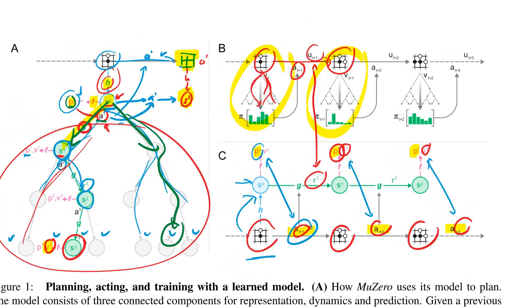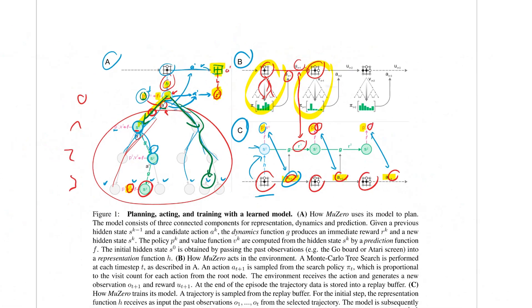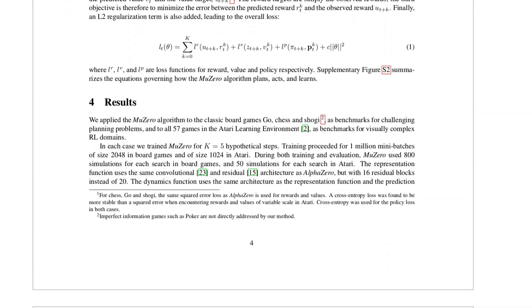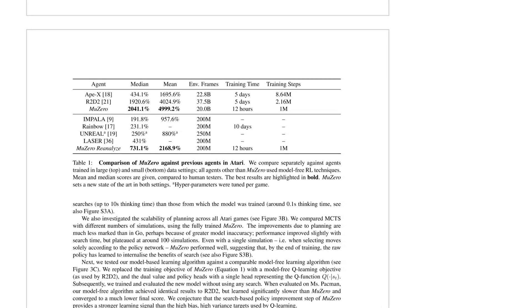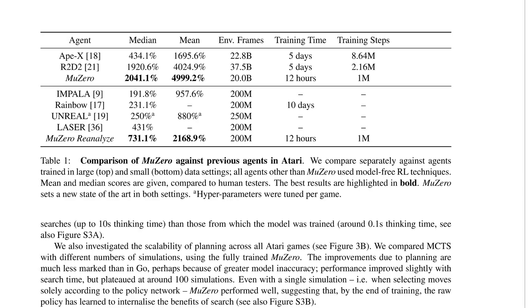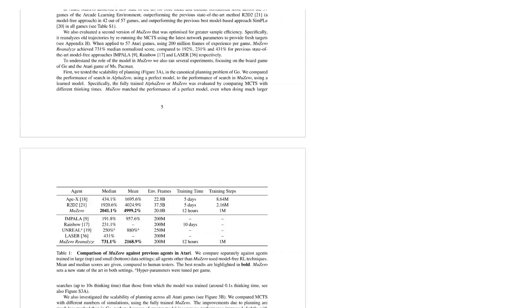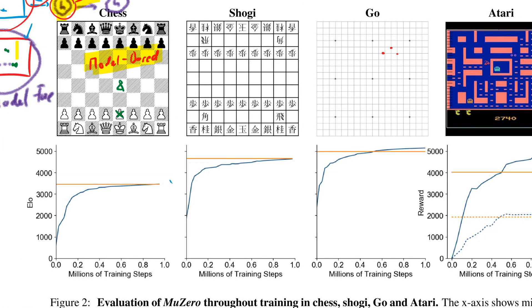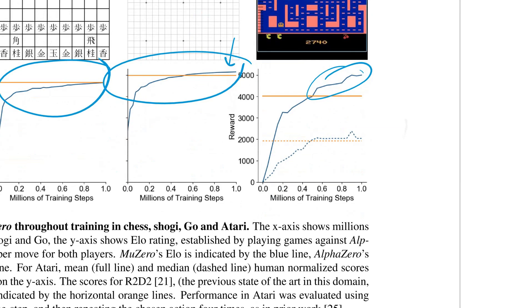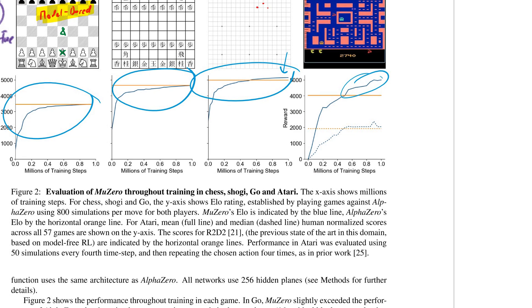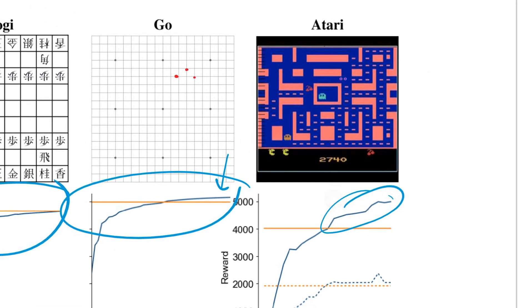That's the core of MuZero — the rest is experiments. They show that in board games (Go, chess, shogi) they match or even exceed AlphaZero's performance without a simulator, using only a learned model. In Atari they actually outcompete the current state-of-the-art model-free RL baselines like R2D2 or Impala.